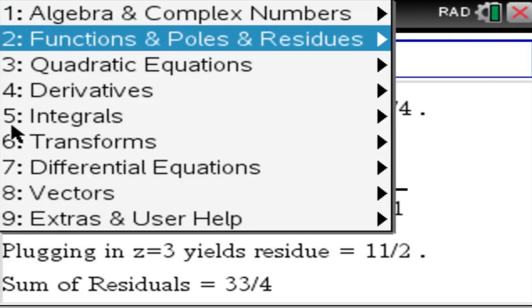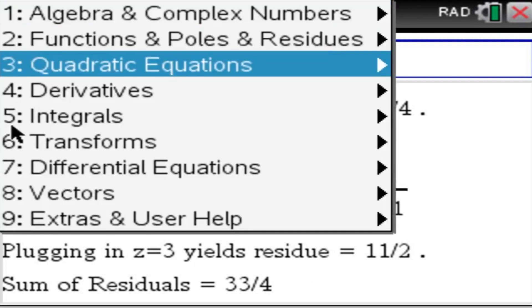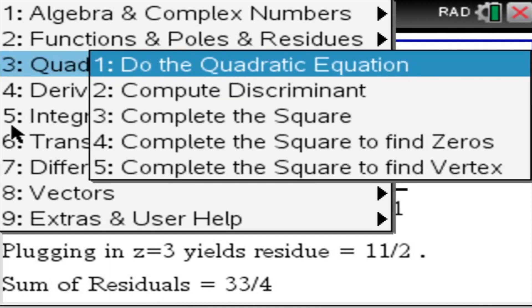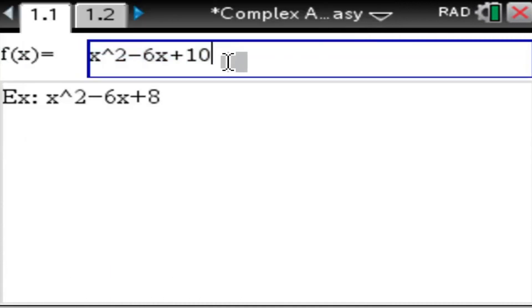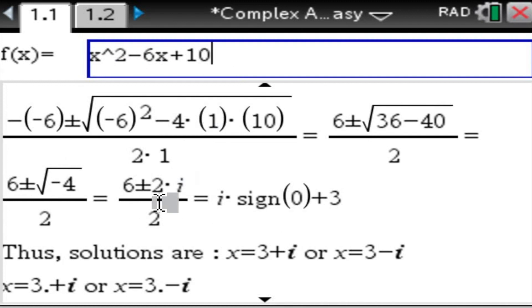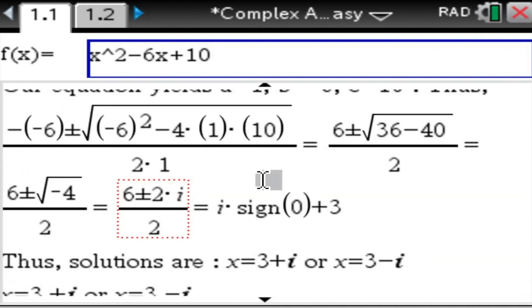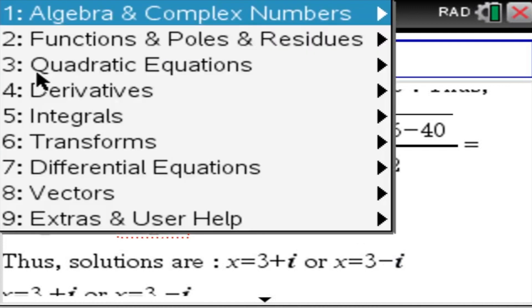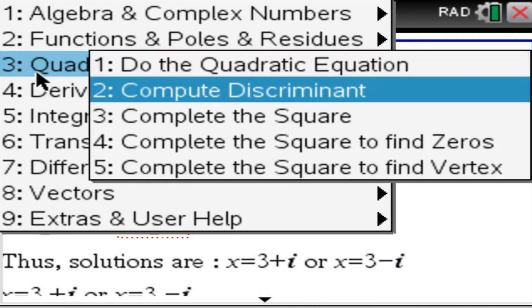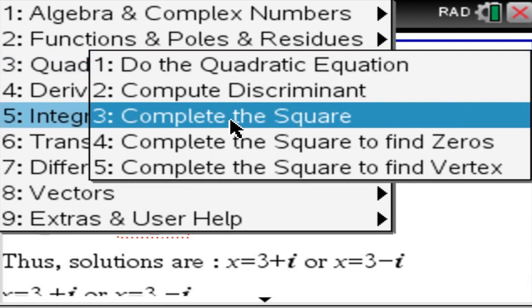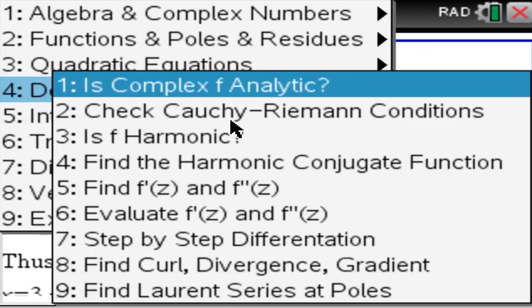So quadratic functions, well, we learned that already in Algebra 2. We just enter a quadratic equation. We can see that our answer is going to be 3 plus i and 3 minus i, works like a charm. Next, we can also complete squares step by step.